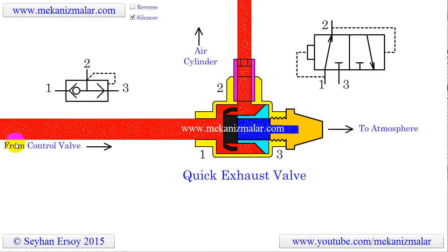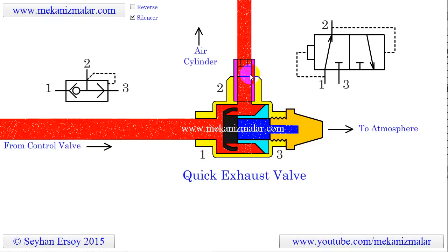Compressed air flows from the directional control valve and via the quick exhaust valve to the cylinder. In order to achieve the full benefit of the quick exhaust function, the valve must be connected directly to the port of the cylinder.